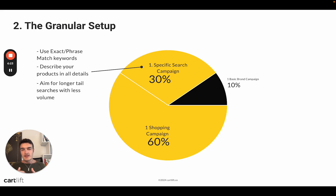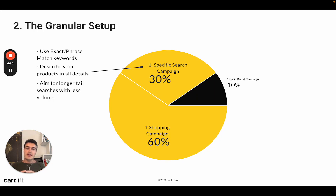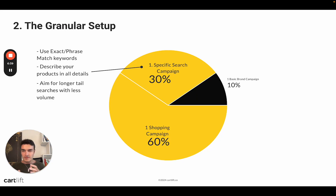That's how you get some traction. Will this setup get you to 50 sales a day? Probably not, because eventually you have to keep adding more keywords and especially broad match at some point — unless you are in a very large space where even super specific exact match keywords have hundreds of thousands of searches per month.